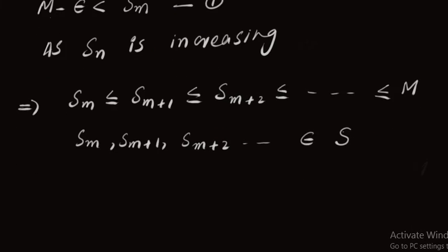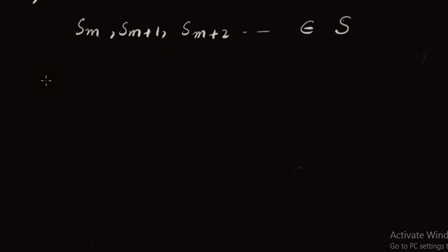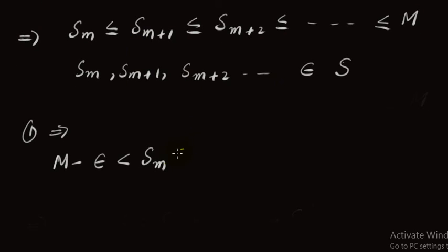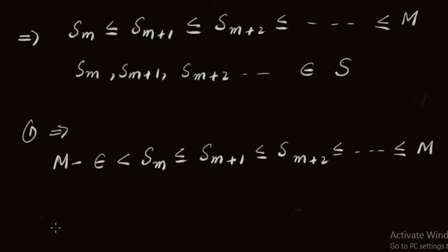S is the range set of the sequence. Using condition 1, we can write: M minus epsilon is less than Sm, and Sm is less than or equal to Sm+1, less than or equal to Sm+2, and so on. All these terms are less than or equal to M.